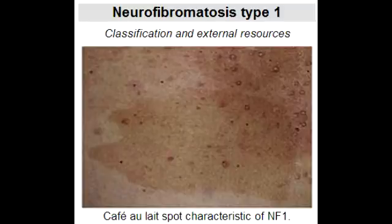Describe the pattern of inheritance in neurofibromatosis type 1. Neurofibromatosis type 1 is an autosomal dominant condition in which there is 100% penetrance and it has variable expression.